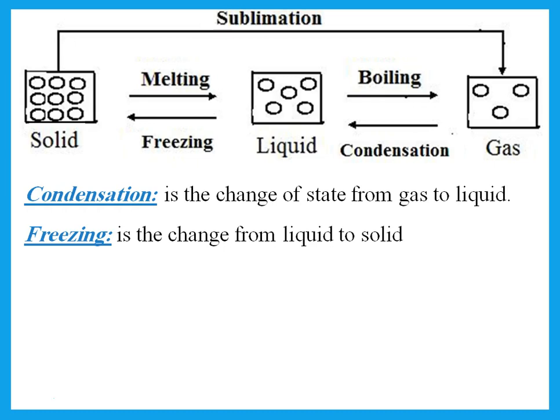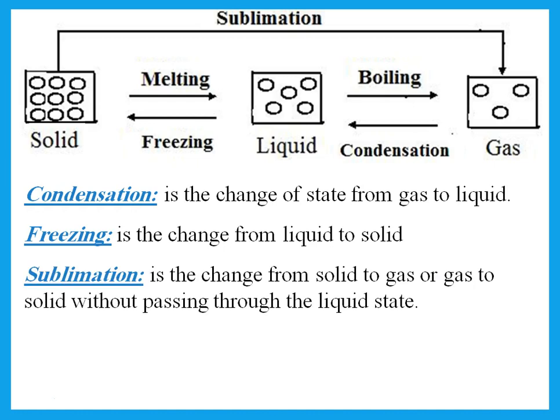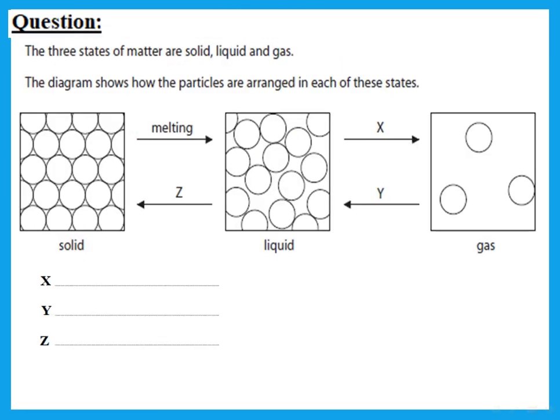Some solids, when you heat them, change directly to gas. And when you cool the gas, it changes directly to solid — that is called sublimation. Sublimation is the change from solid to gas, or gas to solid, without passing through the liquid state. Remember that only some substances undergo sublimation. Usually, a solid should melt to become a liquid and then boil to become a gas.